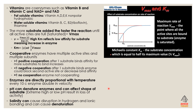Enzymes are directly proportional to temperature — every 10 degrees Celsius, enzyme velocity doubles. pH can denature enzymes and affect the shape of the substrate; extreme high or low pH can result in loss of activity. Salinity can also disrupt hydrogen and ionic bonding and cause denaturation. So two factors that can cause denaturation are salinity and pH.